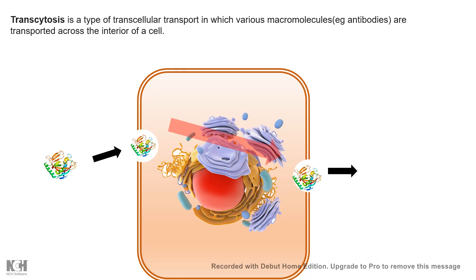We will take an example to understand this process. One of the most important antibodies secreted in breast milk, tears, or saliva is IgA. We will look at how the IgA antibody is transcytosed.